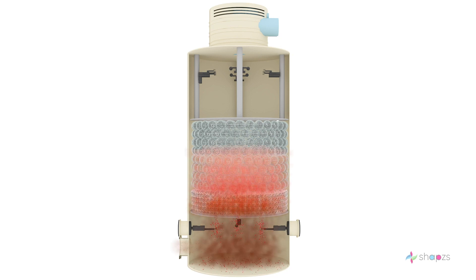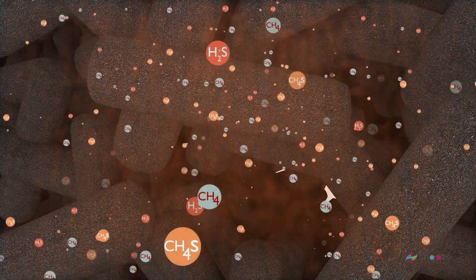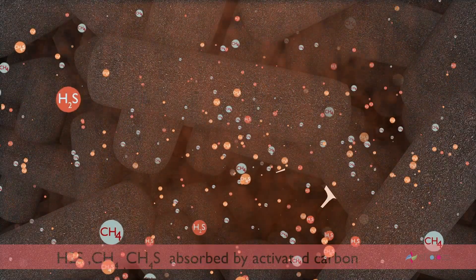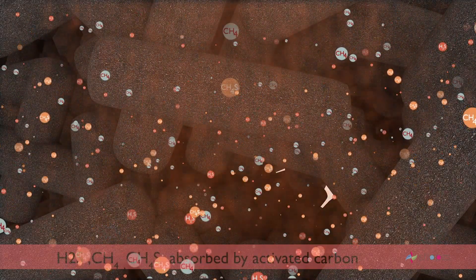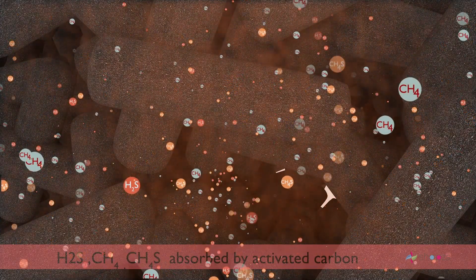The gas removed of H2S then enters the upper layer which has cage balls filled with activated carbon. In this layer the remaining H2S, methane, and mercaptans are absorbed by the activated carbon. The height of this layer will be about 500 mm.